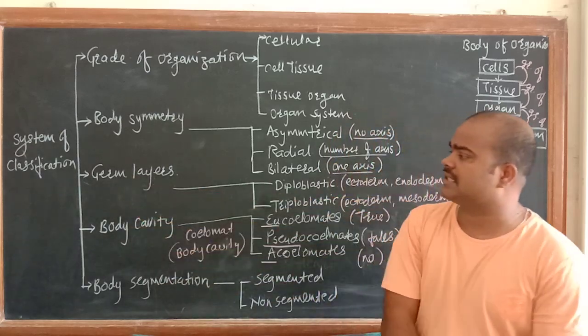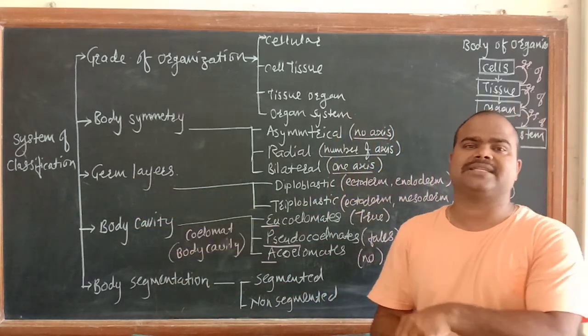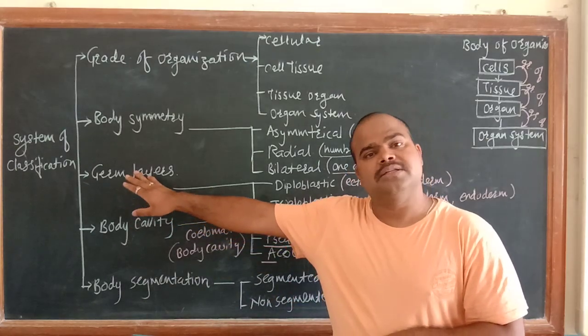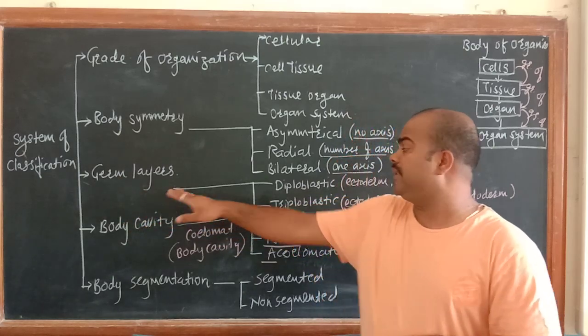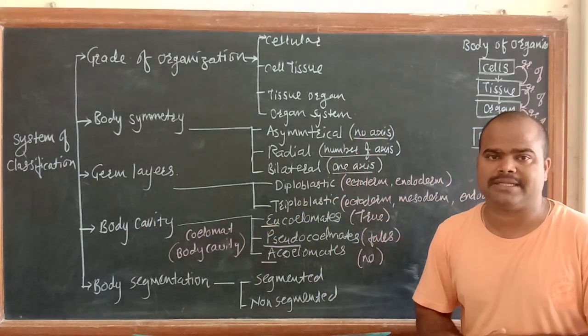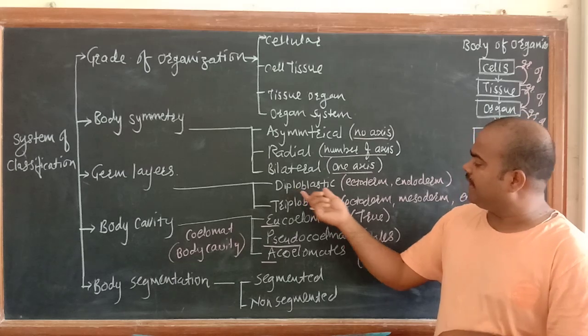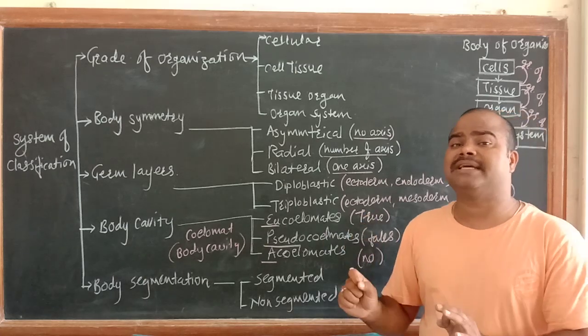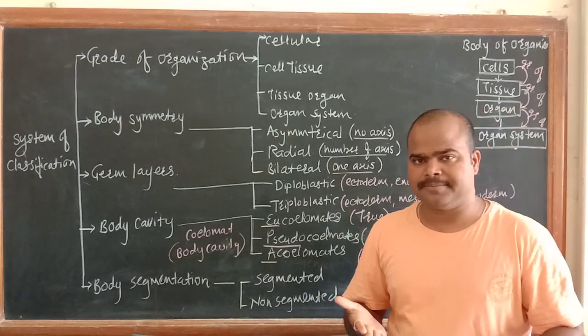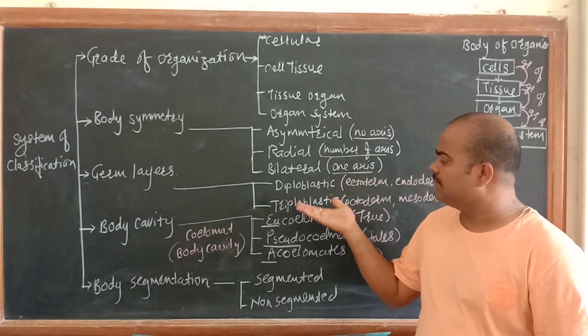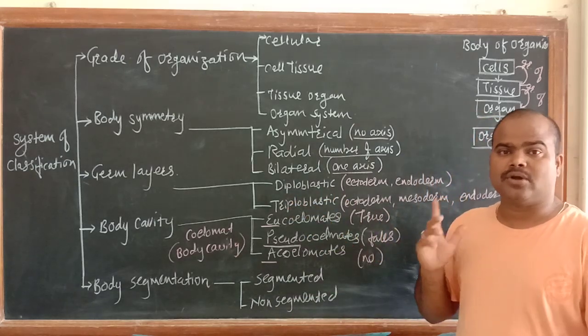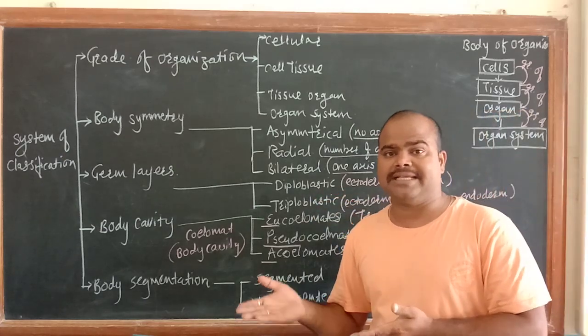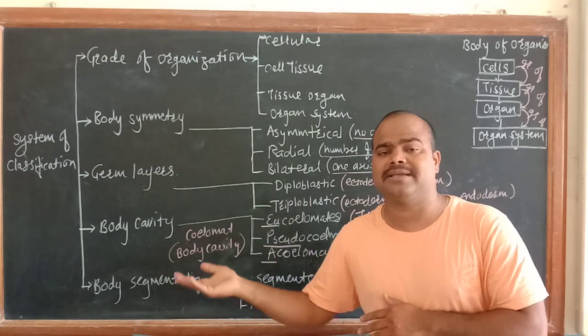Next, the germ layers. We already discussed germ layers. Germ cells are sex-determining cells, or sex cells. These germ cells have two types: diploblastic and triploblastic. Diploblastic have an ectoderm and an endoderm - two layers only. On the basis of diploblastic and triploblastic, we categorize some animals into diploblastic and triploblastic.